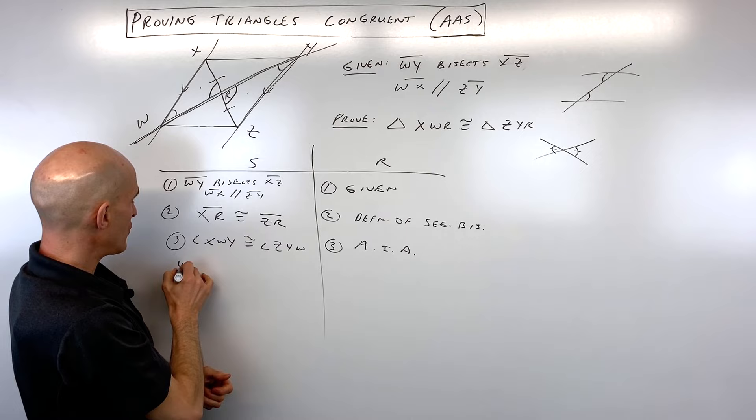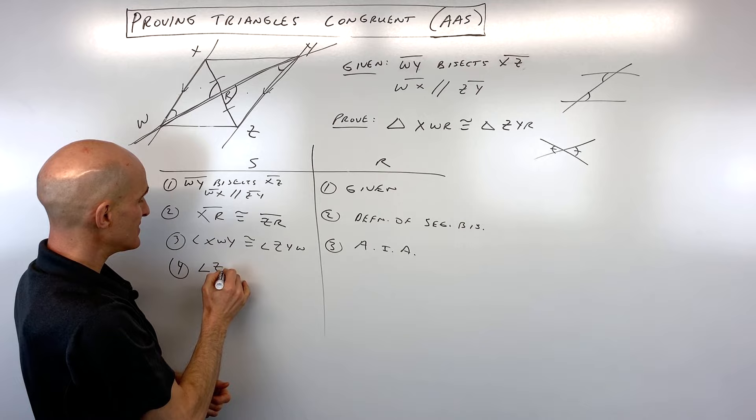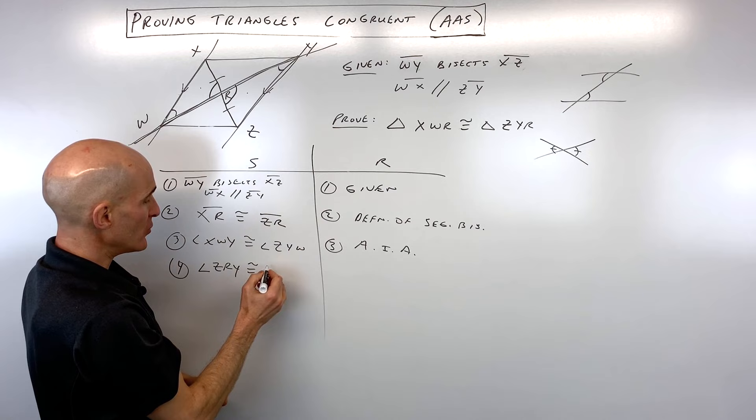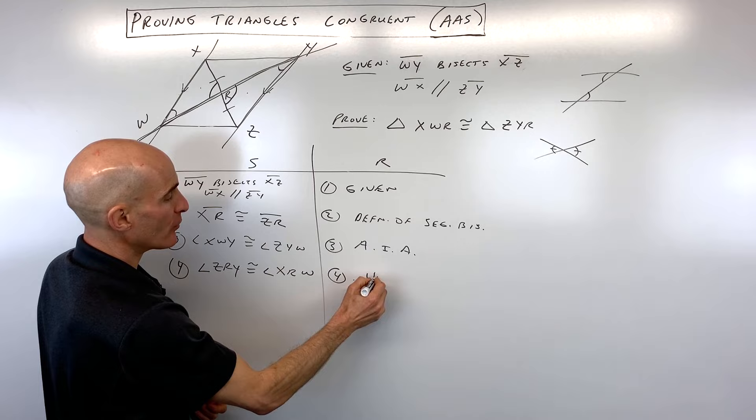We're going to say angle ZRY is congruent to angle XRW. And we said that's by vertical angle theorem, or you could just say vertical angles.